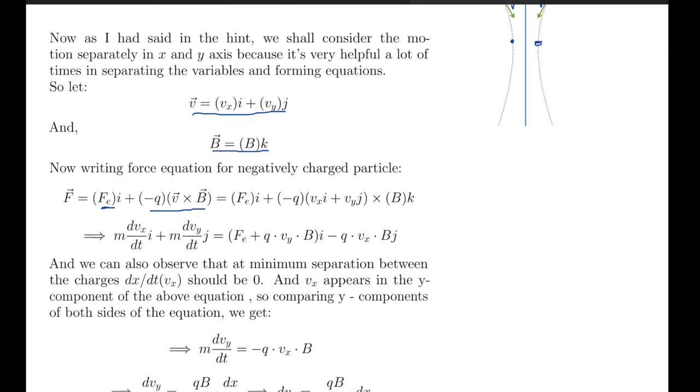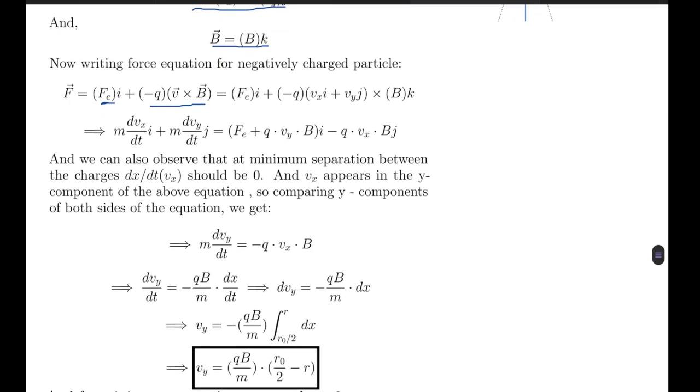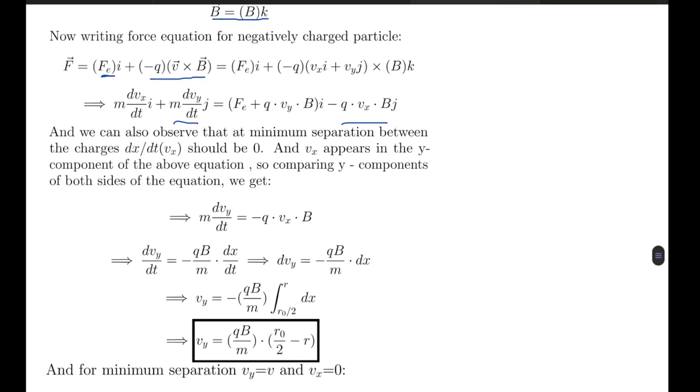So comparing y components of both sides of the equation, what we get is y component which means m dvy by dt equals to minus q vx B. So from here what we get is dvy by dt equals to minus q by m times dx by dt, and dvy equals to minus q B by m dx.